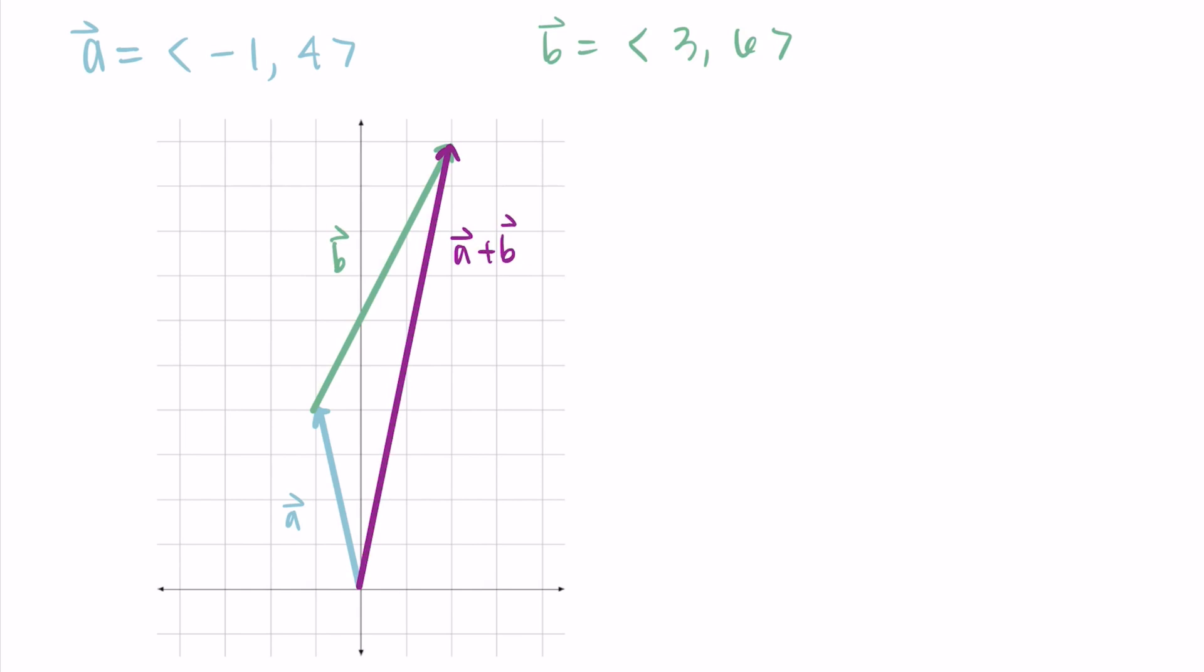And if we look, the movement should match what we got from previously in the algebraic part. So I'm seeing a movement by two to the right, that's in the x direction, and a movement of 10 up, that's in the positive y direction. So my vector should be 2, 10, which is what we found algebraically.